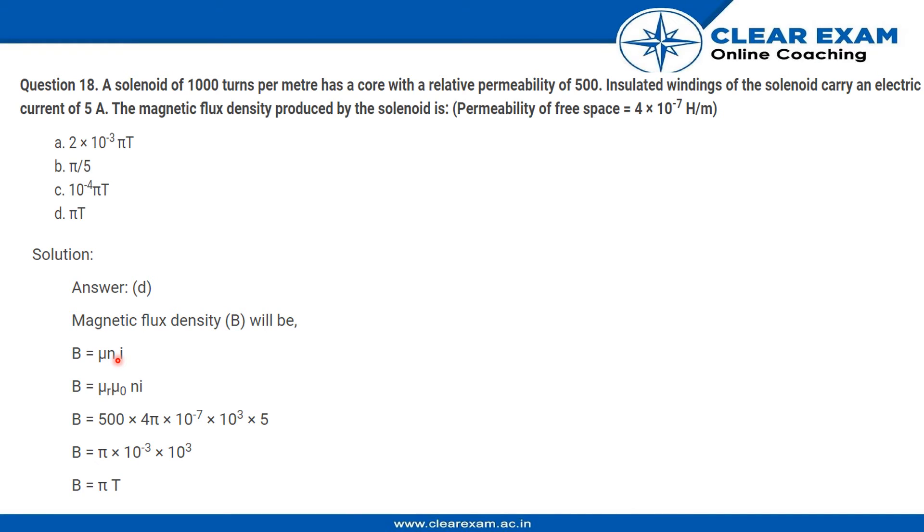Into the relative permeability for the material, so μᵣ is given to us. We know the value of μ₀ is 4π × 10⁻⁷. n is 10³, which is 1000 turns, and I is 5 in this case because the current is given over here.